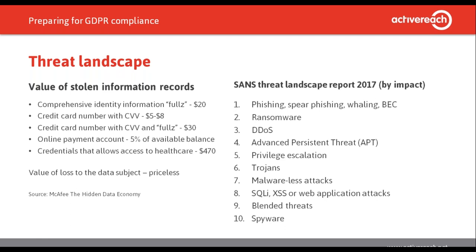The SANS threat landscape reports and the Verizon DBIR are well worth reading for real data on cyber attacks. All the usual suspects are there, from cheap lucrative attacks like phishing and ransomware through to more complex and sophisticated exploits. GDPR is not just about data theft - it considers availability as well. The Azure cloud in Europe failed for several hours because of an accident involving fire suppression systems, and the national lottery website was knocked offline by a DDoS attack.